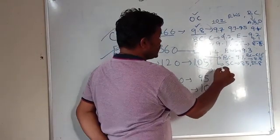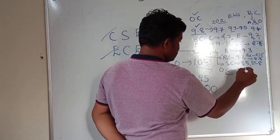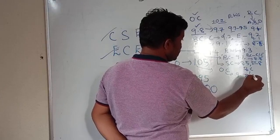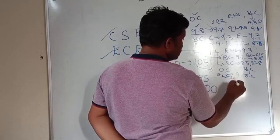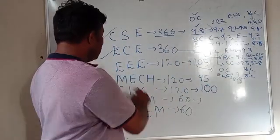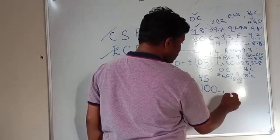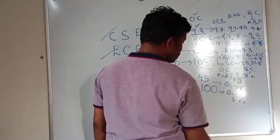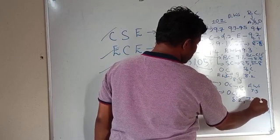The open cutoff is around 9. For triple E, the open cutoff is around 9, EWS is around 8.5. For civil and mechanical, the open cutoff is around 8.2. For mechanical, the open cutoff is around 8. EWS for mechanical is around 7.5, and for civil around 7.7.